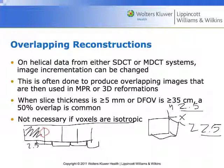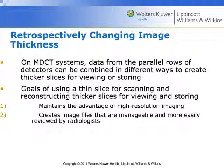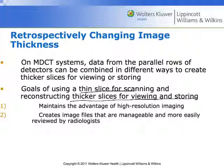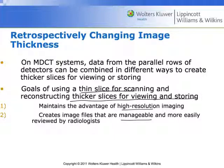We can retrospectively reformat the image to change the thickness of the slice, and that's precisely what we're doing when we do overlapping reconstruction. On a multi-detector system, the data from parallel rows of detectors can be combined — sometimes we use a thinner slice for scanning, but then we reconstruct at a thicker slice for viewing and storing. This maintains high resolution for the image and makes the workflow more manageable. Radiologists are seeing quite a few images — one institution I looked at had radiologists required to read or interpret an image every three to four seconds, so anything we can do to help manage that data volume they will appreciate.